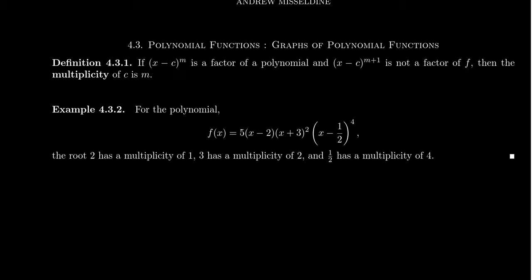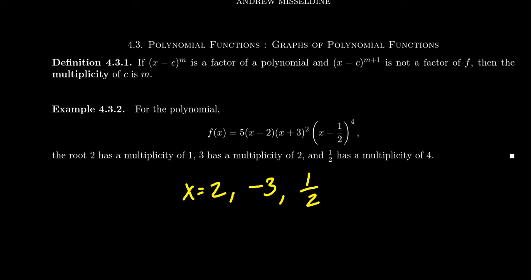Here's a quick example. We look at the polynomial f(x) = 5(x − 2)(x + 3)²(x − ½)⁴. This polynomial is factored, so we can very quickly identify the roots. We get that x = 2 is a root from the factor (x − 2), x = −3 is a root from the factor (x + 3), and x = ½ is also a root.